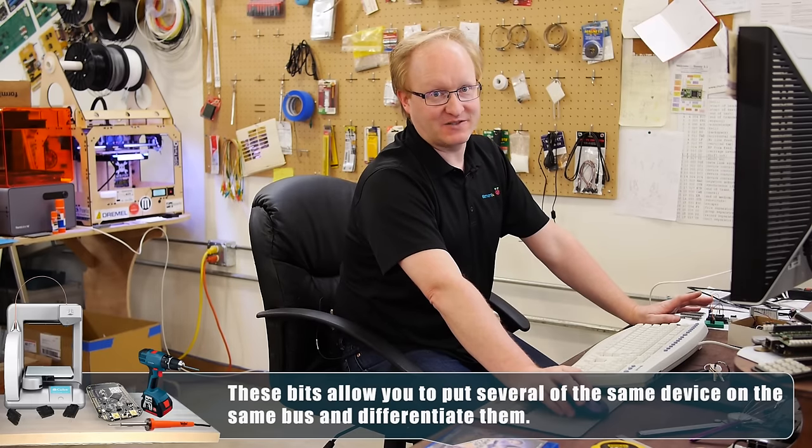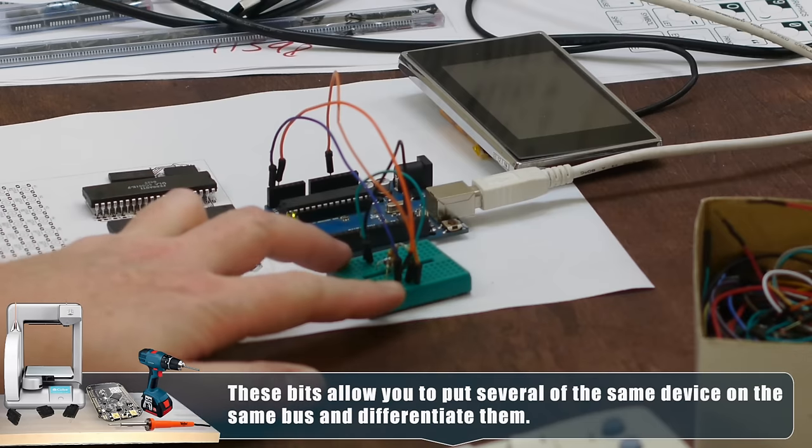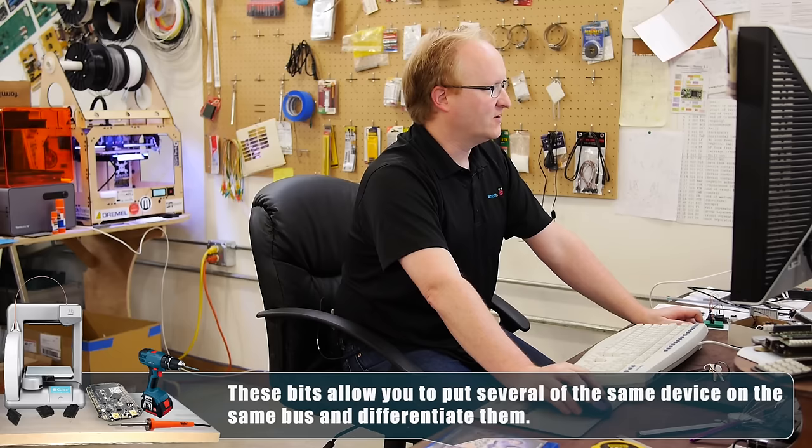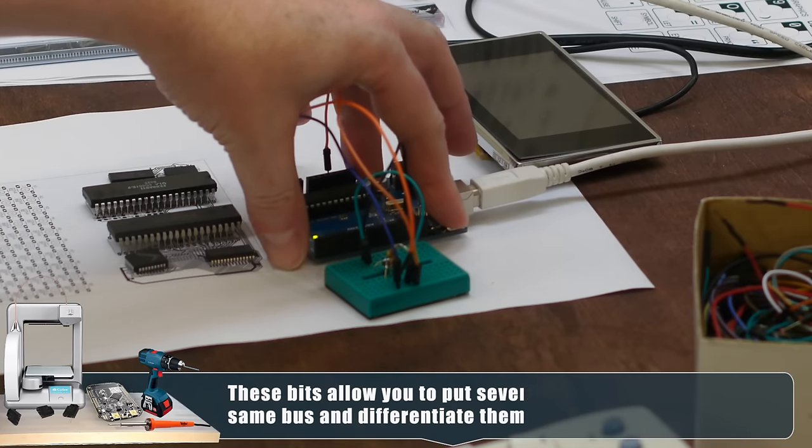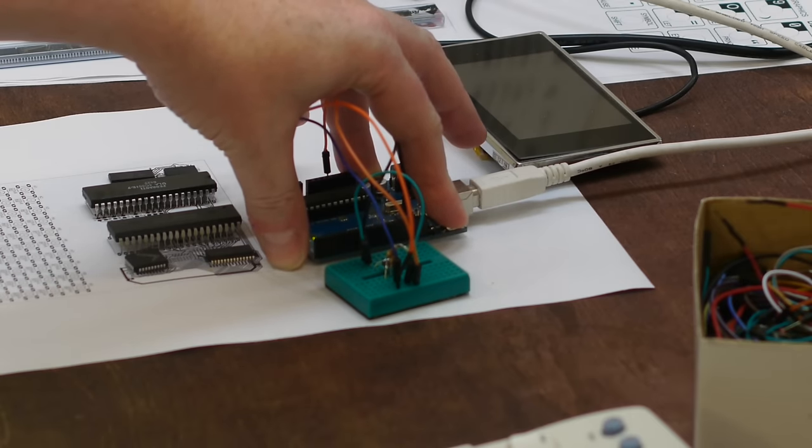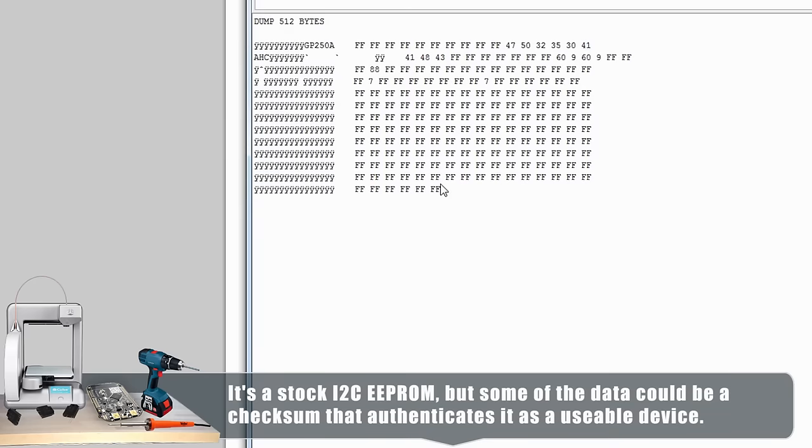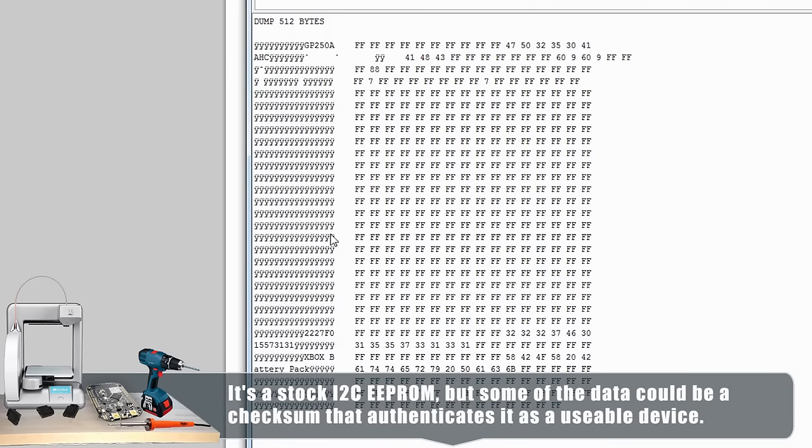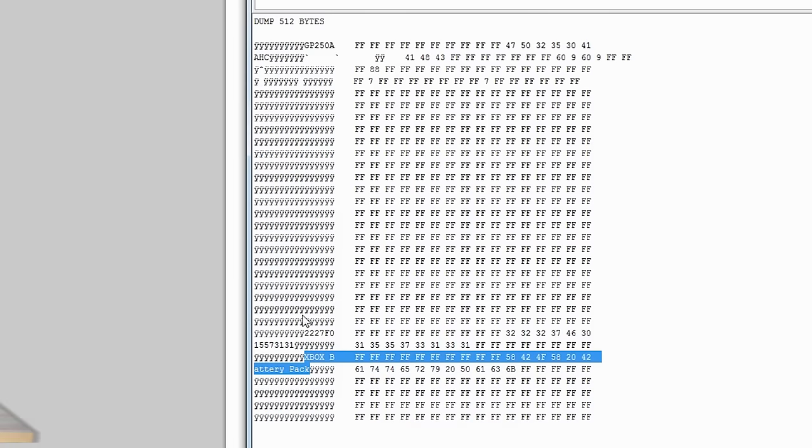I've attached the Surface Mount EEPROM we found inside of the Xbox 360 battery pack to this breadboard and our Arduino. So we should be able to see what's on it. I'm going to start the serial monitor, release, reset. Okay, there are the memory contents. Not a whole lot in it, only 512 bytes. Here we can see Xbox battery pack, where it identifies itself.